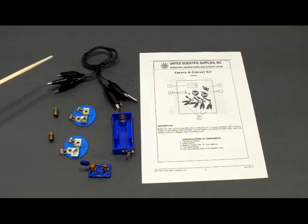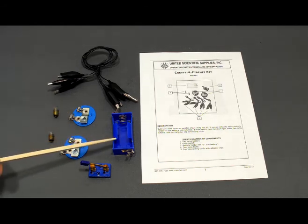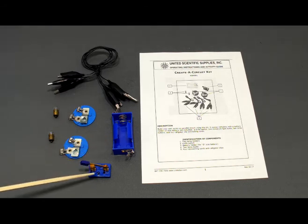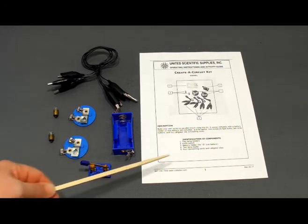The kit comes with four alligator plug wires, two light bulbs, two light bulb holders, a battery holder, a single throw switch, and instructions.